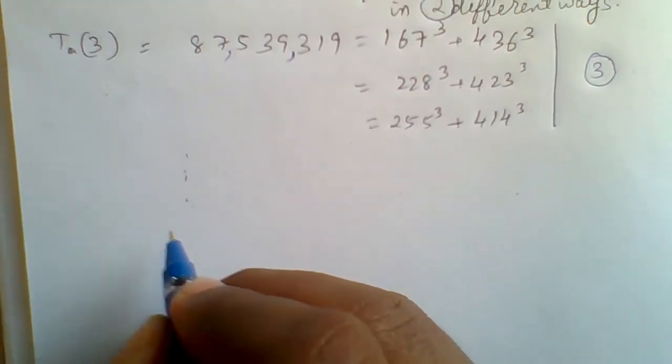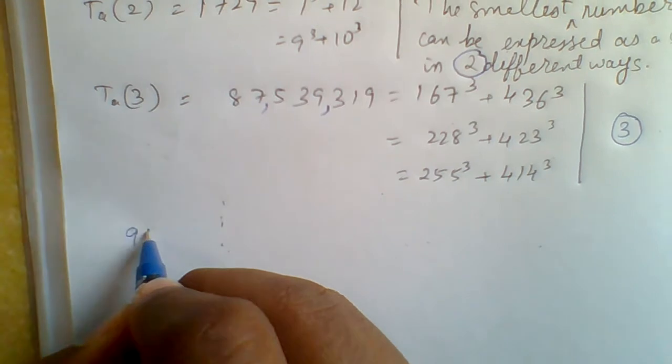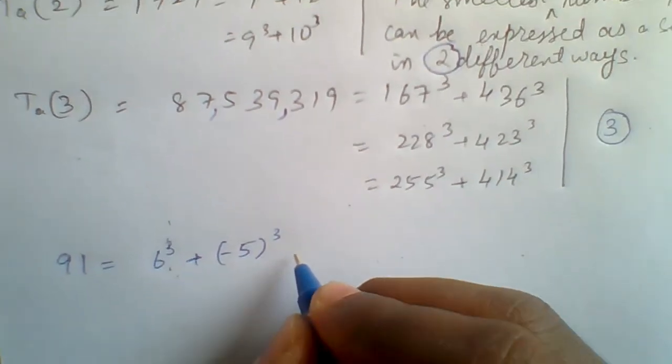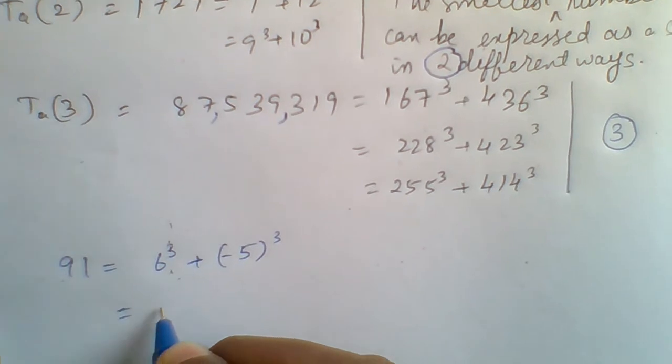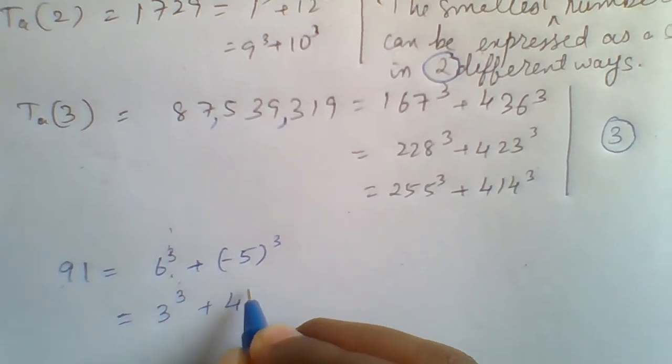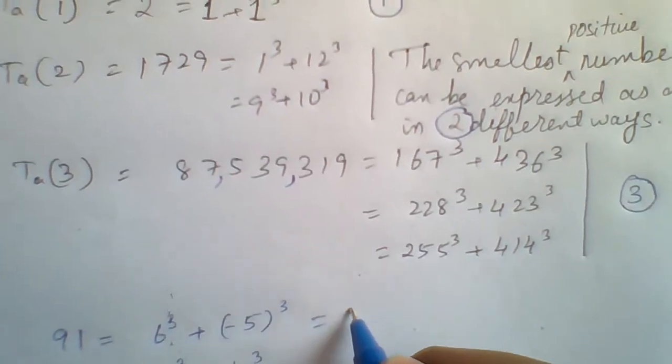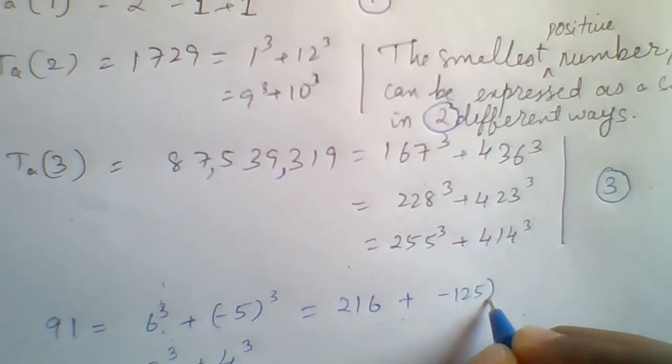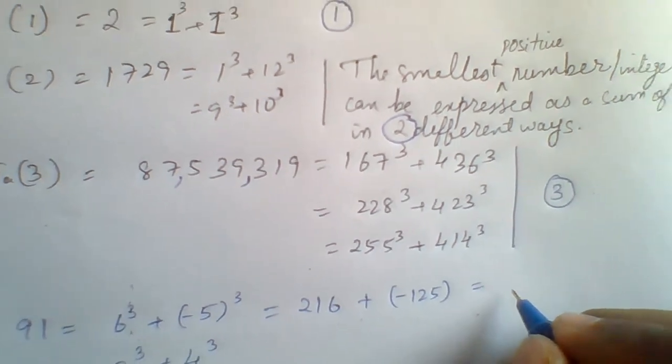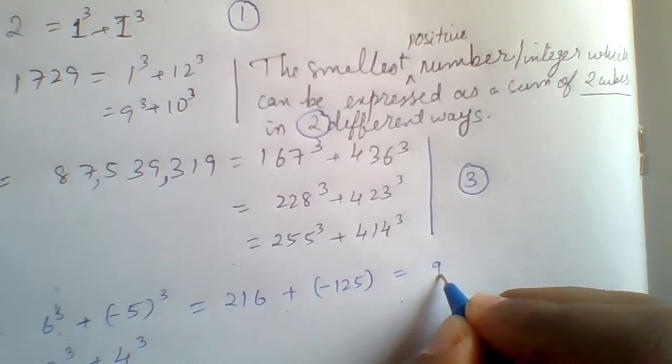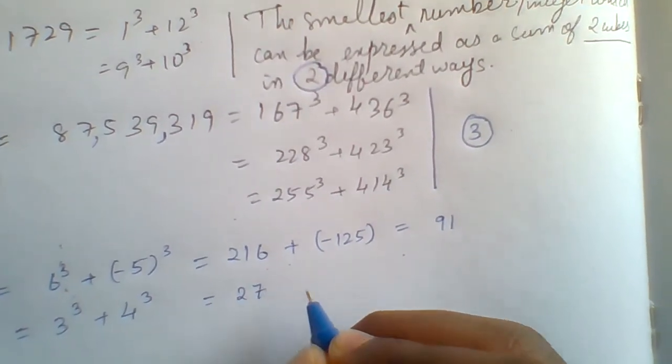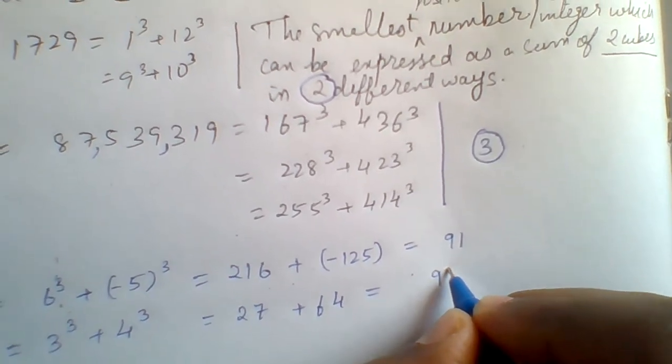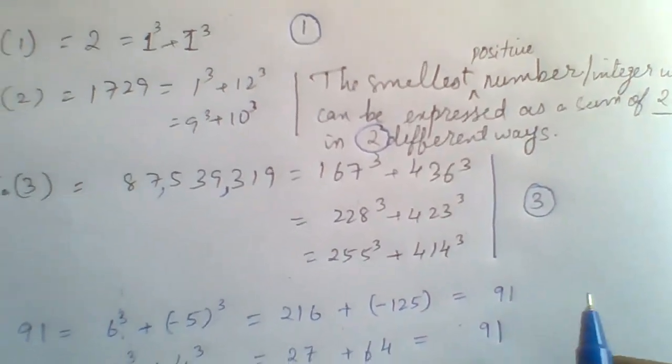But trying to oppose Ramanujan's ideas, we can write 91 as 6³ + (-5)³, right? And we can write this also as 3³ + 4³. We know that 6³ is equal to 216 and -5³ is -125, and when we add these we get 91.